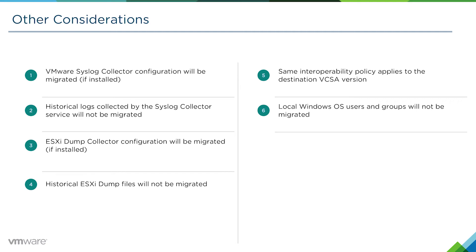The same interoperability policy applies regardless of whether you've performed a migration or just done a standard upgrade. It doesn't matter whether you've upgraded a vCenter to 6.5 or migrated a vCenter to 6.5. We would urge you to consult the VMware Hardware Compatibility Guide and Interoperability Guide for vSphere 6.5 before performing a migration.